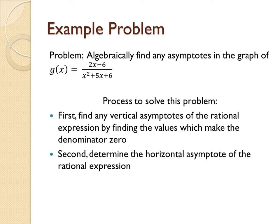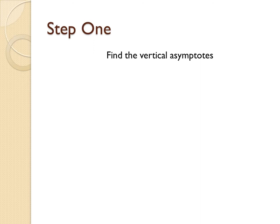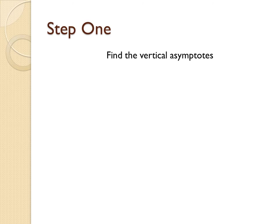For step 1, we will find the vertical asymptotes of this rational expression. To do so, we will first set the denominator of the rational expression equal to zero. This will result in the equation x² + 5x + 6 = 0.